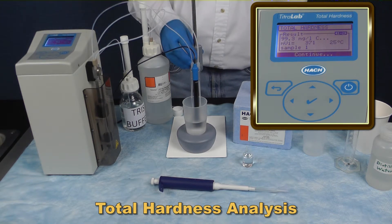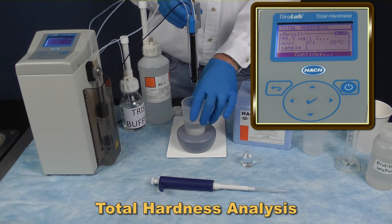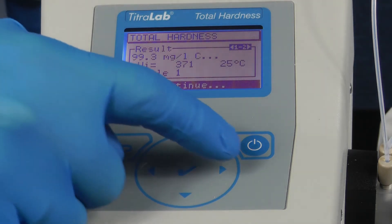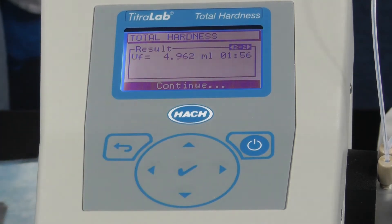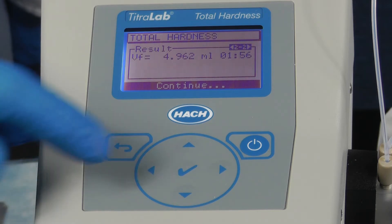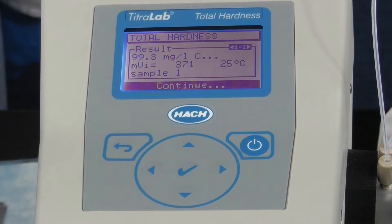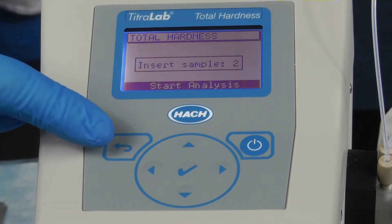Once the analysis is completed, your results are displayed on the screen. Here are the results for our analysis. If you press the right or left arrow keys, you can see the volume to reach the inflection point of the titration. Our result of 99.3 milligrams per liter CaCO3 is within the expected range of plus or minus 10% of 100 milligrams per liter CaCO3. Press the return key to return to the main menu.